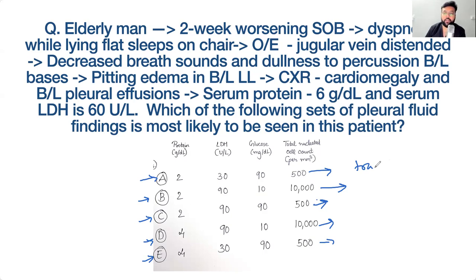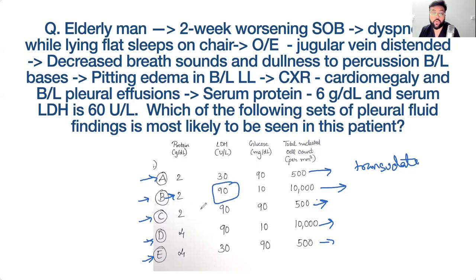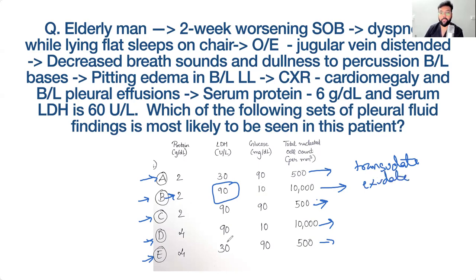Option A is transudate. What about B? It is exudate — why? Because the LDH is around 90, which exceeds two-thirds of the upper limit. LDH should be more than 200 or more than 2/3 of the upper limit to be called exudate. Option C is also exudate. Option D is also exudate because of both protein and LDH criteria.